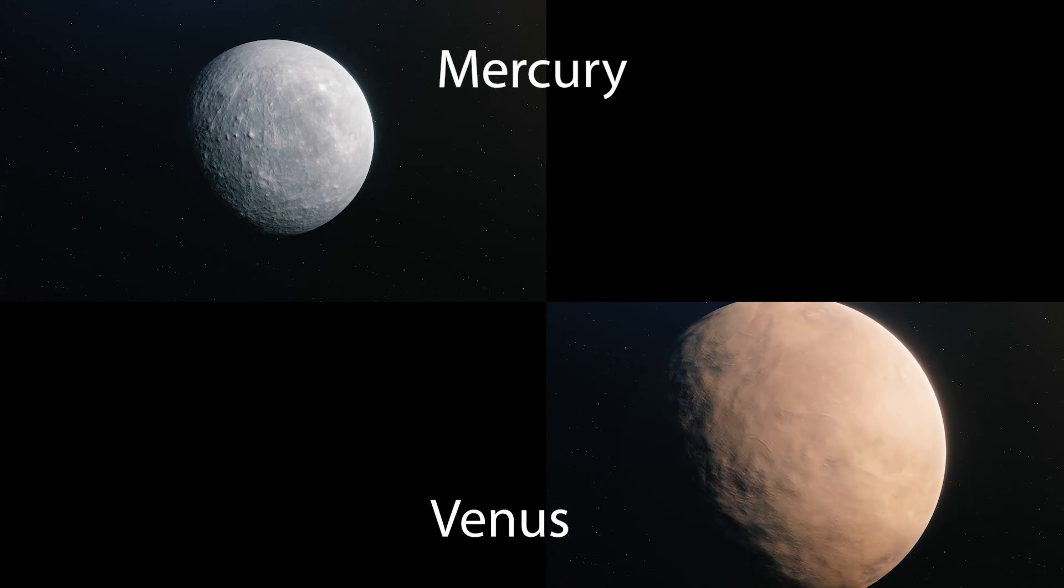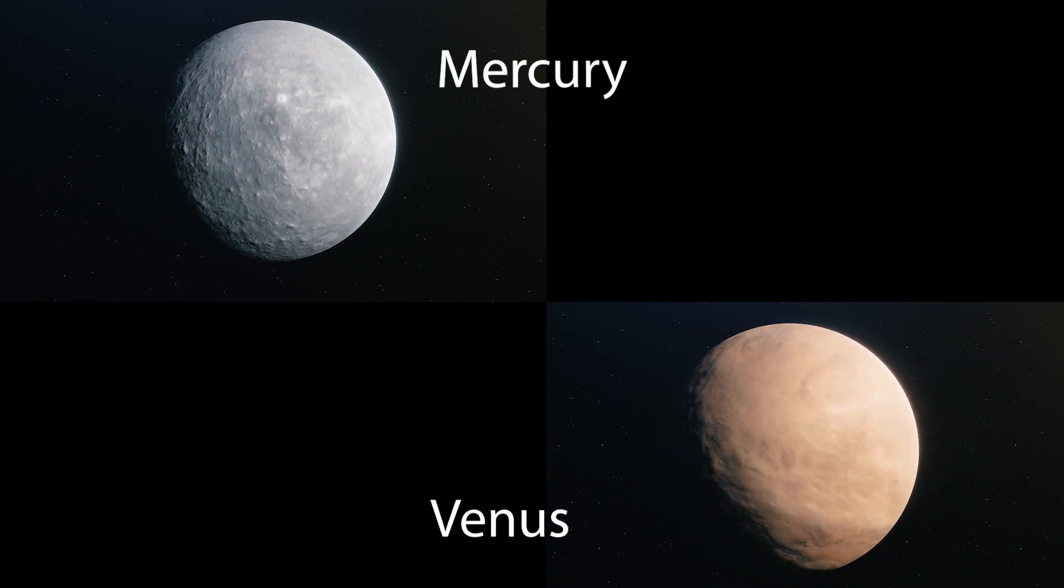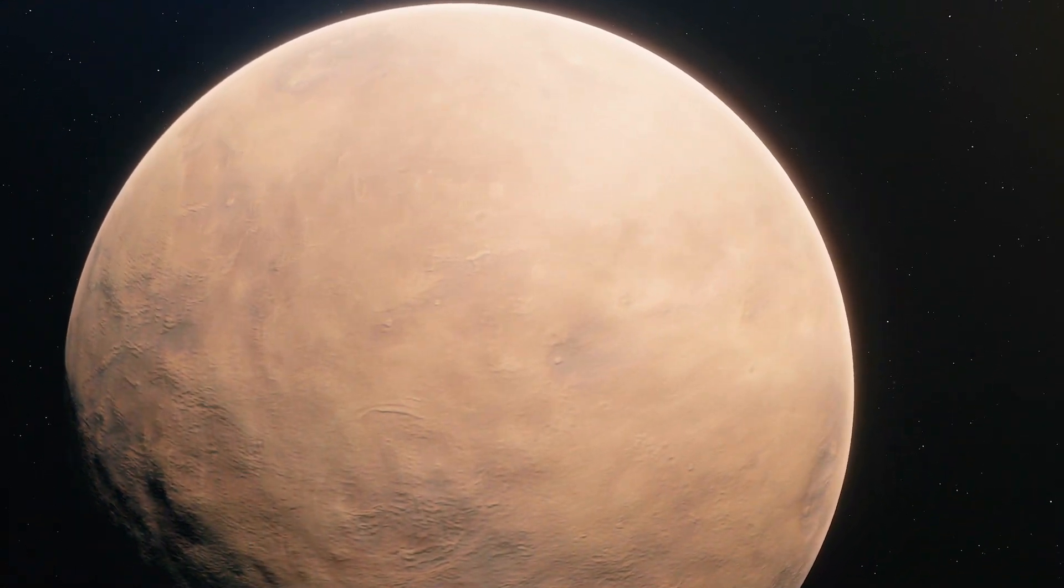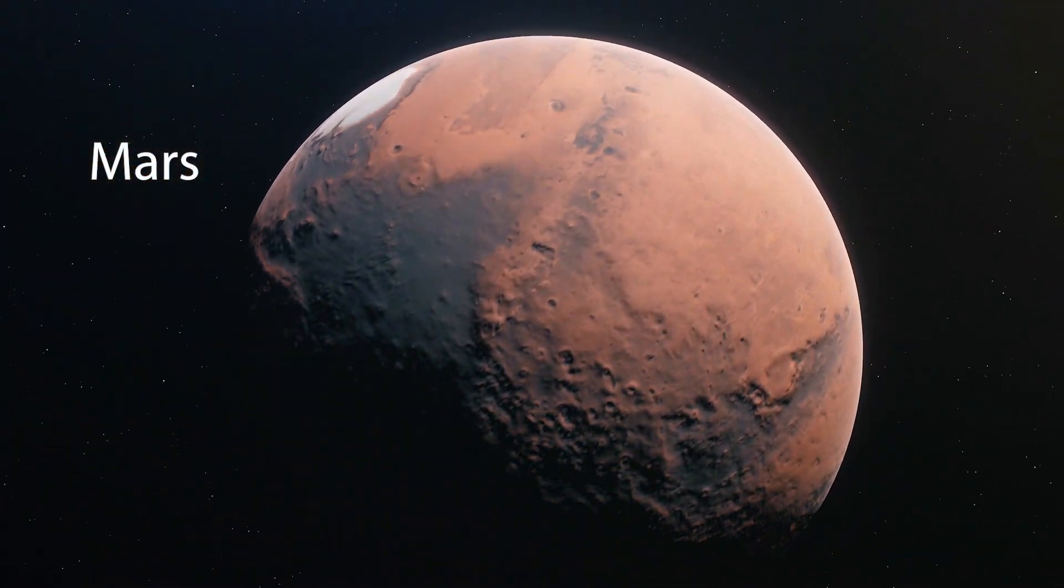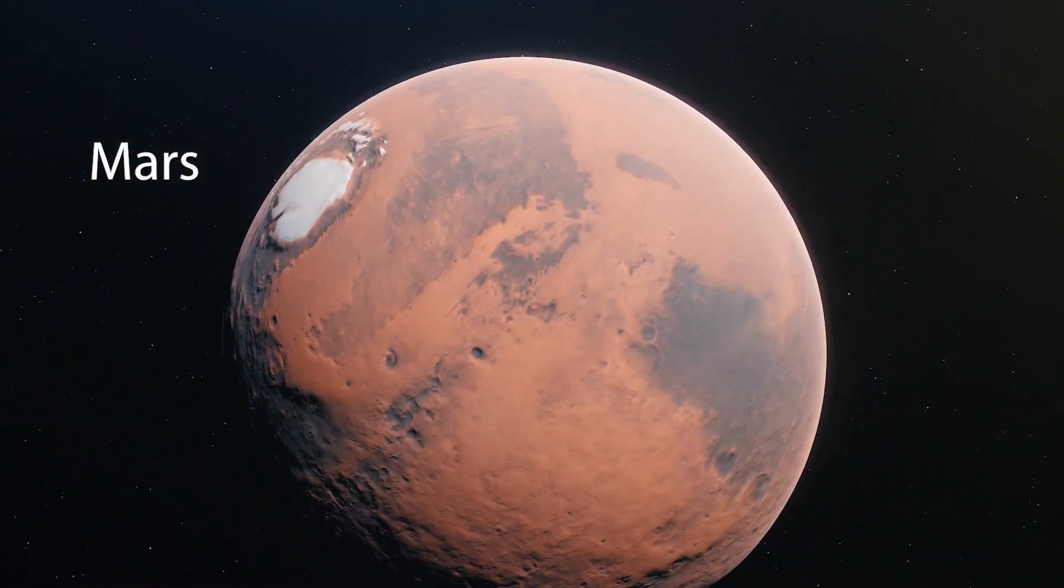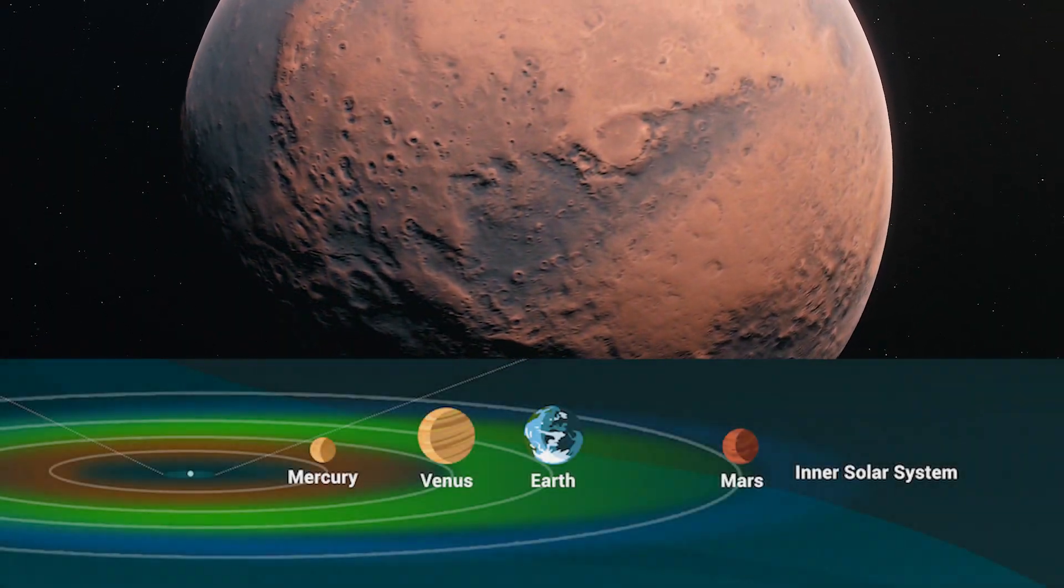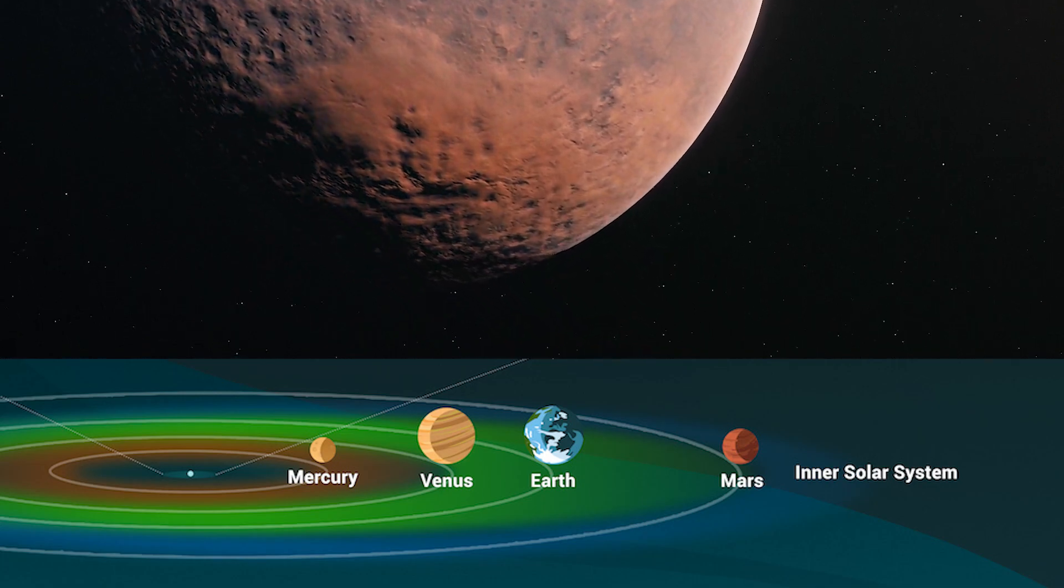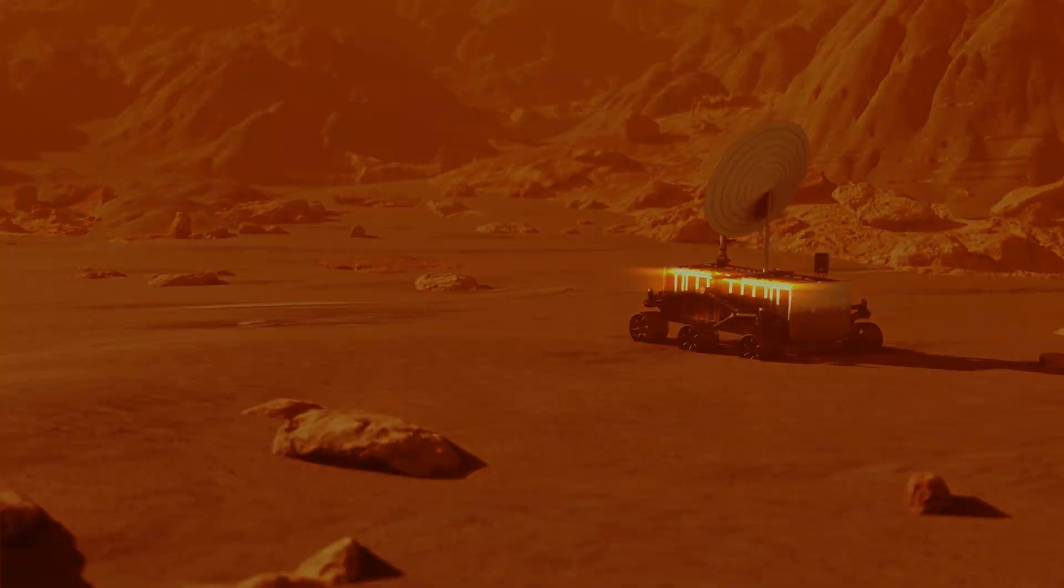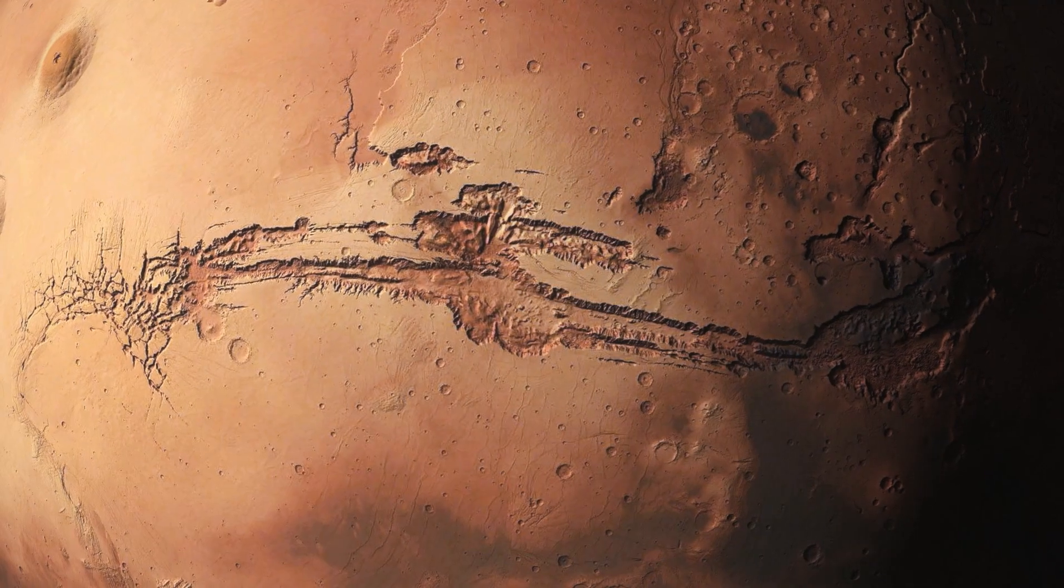The first two planets, Mercury and Venus, are too close to the sun and as a result have extremely high temperatures. The fourth planet, Mars, has an atmosphere that is a hundred times thinner than Earth's. Mars exists on the outer boundary of the habitable zone, and our robotic space missions there have found evidence of ancient lakes and minerals that could have only formed in water.